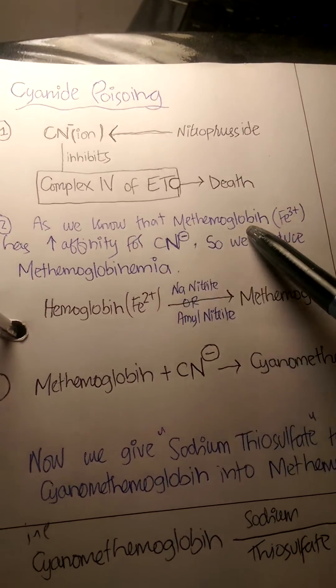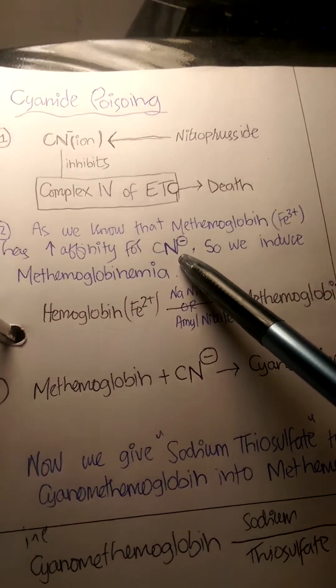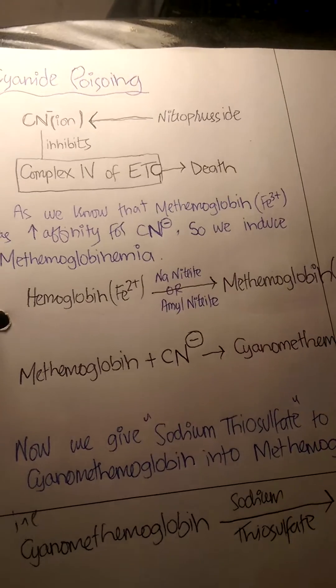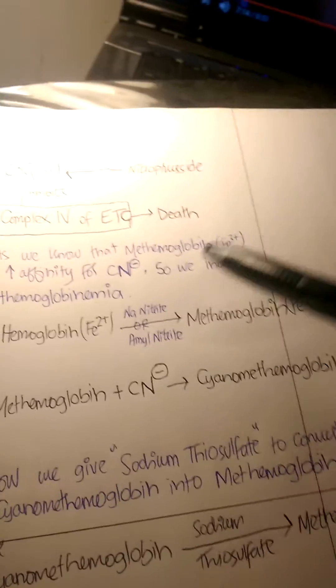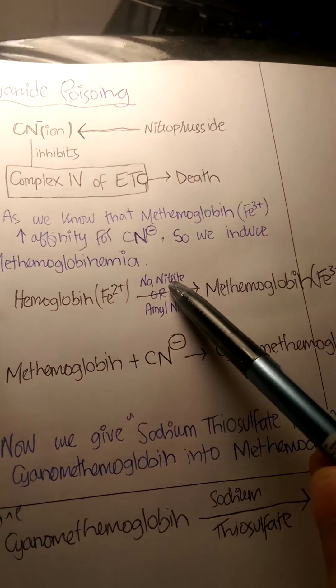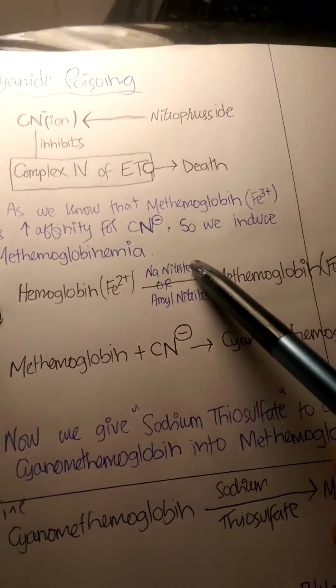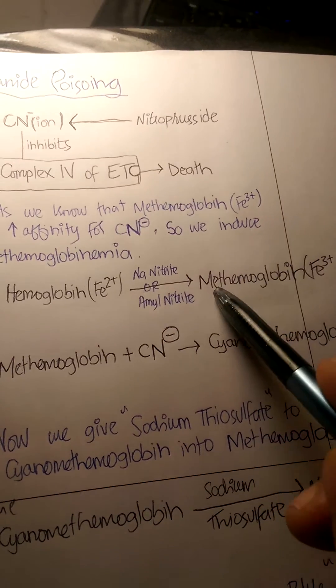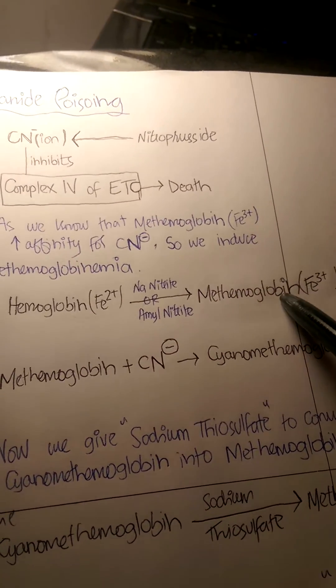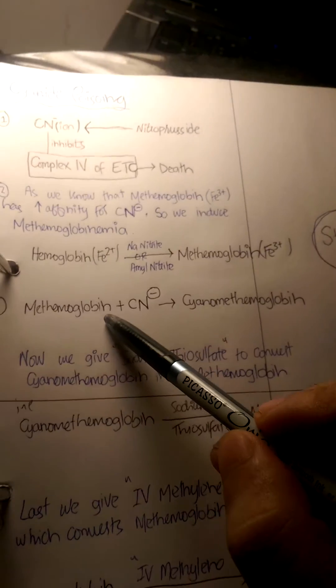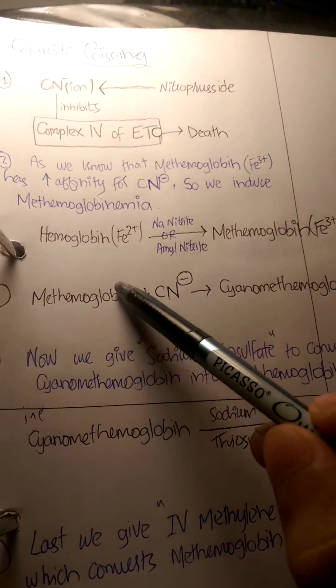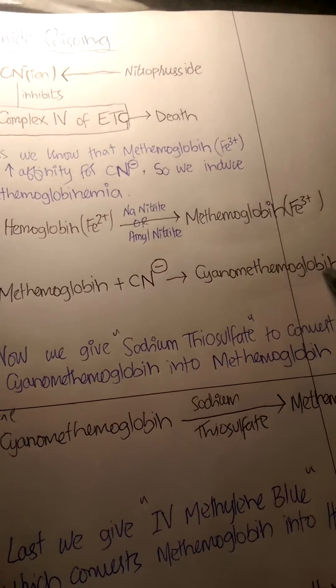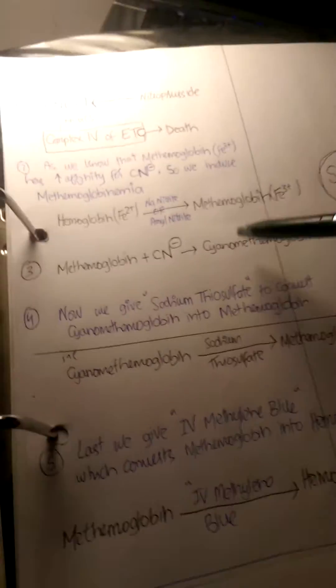This is step one: we give sodium nitrite or amyl nitrite, which convert hemoglobin into methemoglobin—from a reduced state into an oxidized state. Methemoglobin then combines with cyanide ions and forms a compound called cyanomethemoglobin.